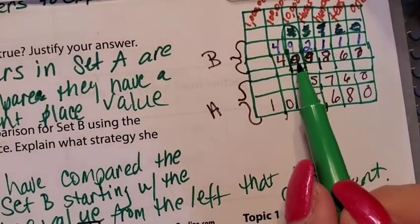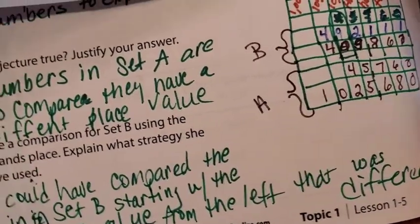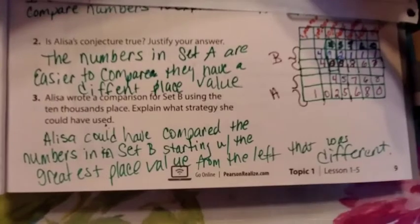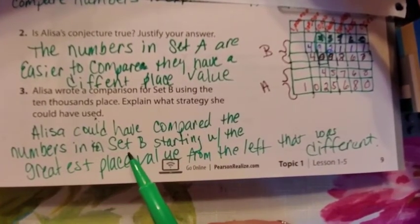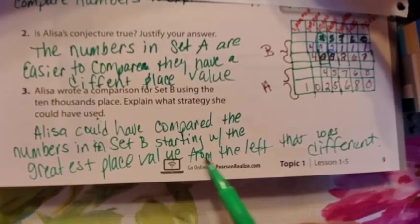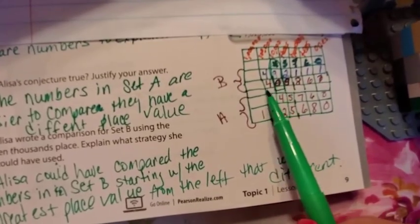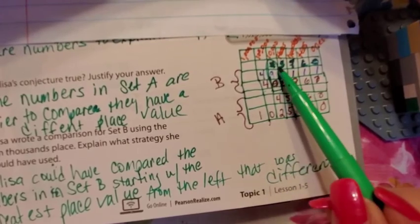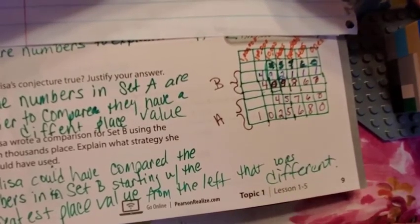And the 9 is greater than the 0. So what I said was this. I said, Alyssa could have compared the numbers in set B, starting with the greatest place value from the left that was different. And that's exactly right. Because right here, we all had 4s in the 100,000th, so we couldn't compare. But in the 10,000th, we had a 9 and a 0, and we can compare.